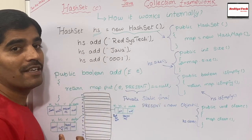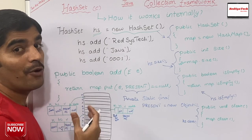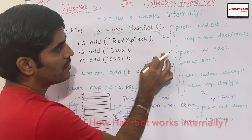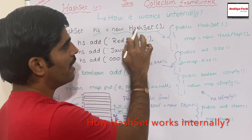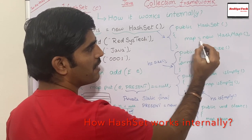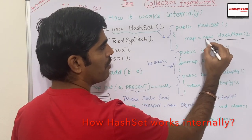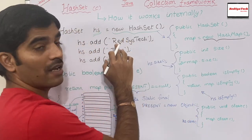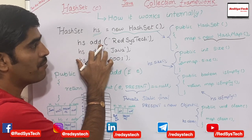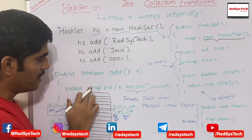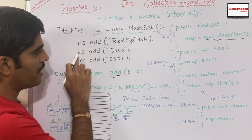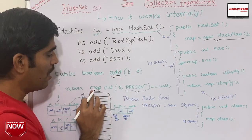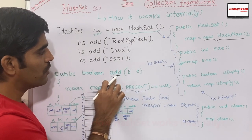We might hear that HashSet internally uses HashMap. Now let's see how it actually works. If you go through the Oracle documentation of the HashSet class, this is how the constructor looks. So HashSet — internally they're creating a new set, new HashMap. So they're creating a new HashMap object and that map object is going to be returned back. And using this map object, whenever I call the add method in the HashSet, it internally uses this map object.